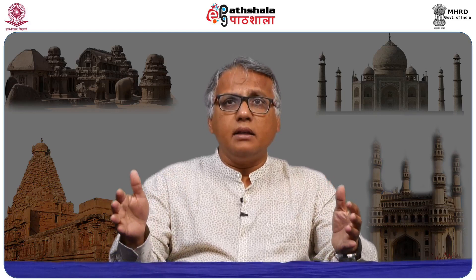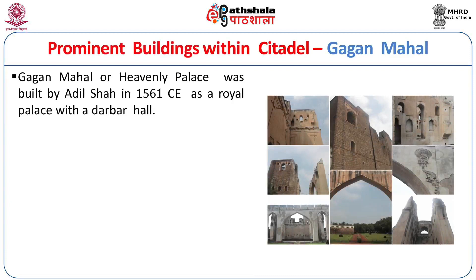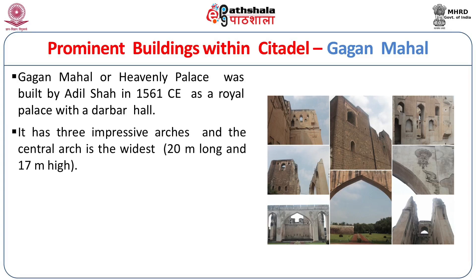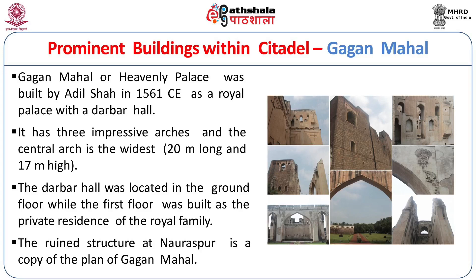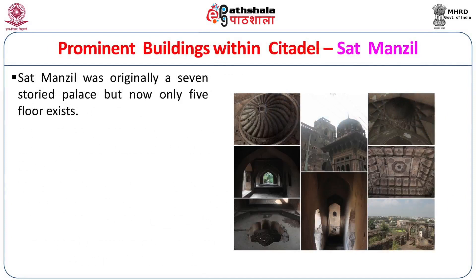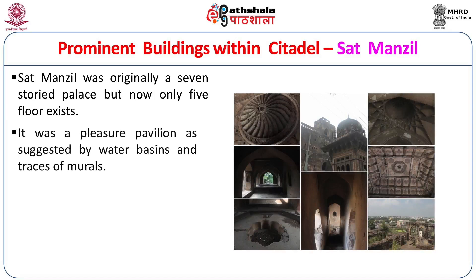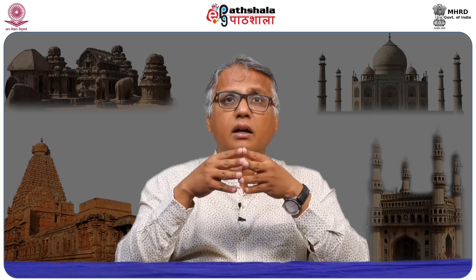Gagan Mahal, meaning Heavenly Palace, was built by Ali Adil Shah in 1561 CE as a royal palace with a Darbar Hall. It has three impressive arches, the central arch being 20 meters long and 17 meters wide. The Darbar Hall was on the ground floor, while the upper floor served as private royal residence. The ruined structure at Nauraspur is a copy of the Gagan Mahal's plan. Sat Manjil, a seven-storied pleasure pavilion, originally had seven floors but now only five remain, with beautiful ceiling carvings.